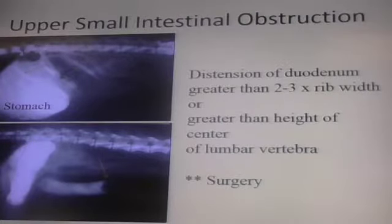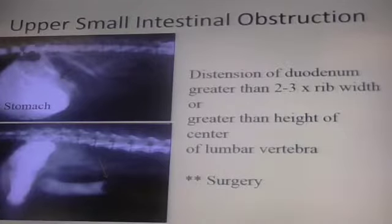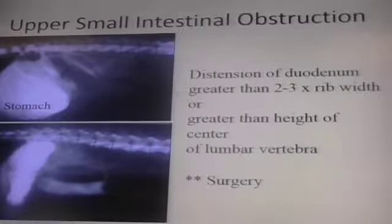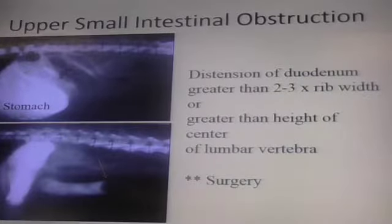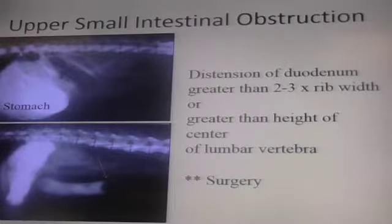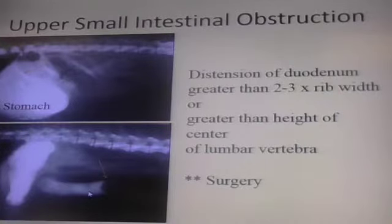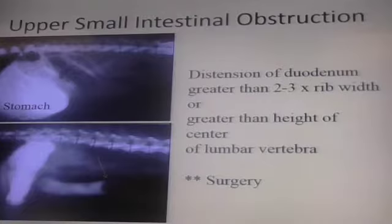Upper small bowel obstruction — we talked about that a little bit before. If it is upper small bowel, you're referring to the duodenum and upper jejunum. If it's lower small bowel, you're talking about lower jejunum and ileum. If there's an obstruction lower, you would expect to see a lot more small intestine distension. If it's upper, look at this one — you want to see the stomach, then the duodenum, and you see smoothly marginated filling defects in the lumen. If you see signs of small bowel obstruction, off to surgery you go.